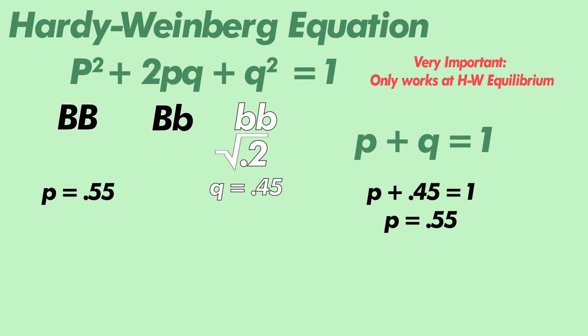Finally, now that we know the proportions of both our dominant and recessive alleles, we can fill in the equation. p² comes to about 0.3, representing our homozygous dominant black sheep. 2pq comes out to 0.5, which is our heterozygous black sheep. And q² comes to 0.2, which is our number of homozygous recessive white sheep.